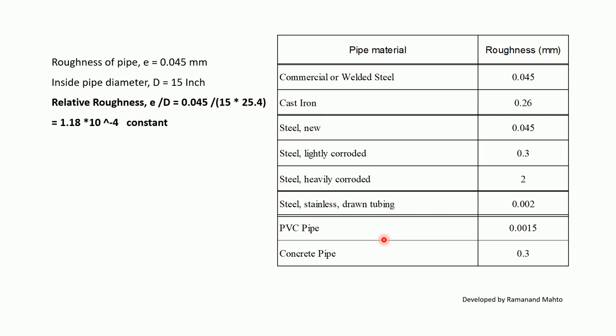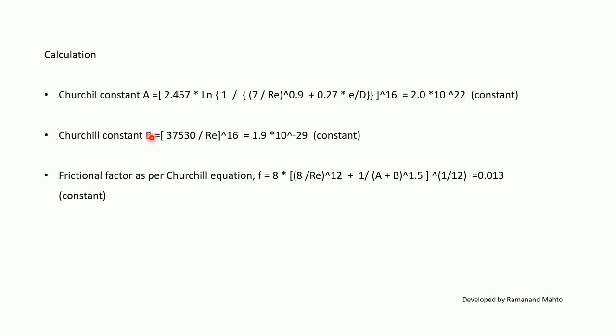From the chart, roughness of pipe e = 0.045 mm and inside pipe diameter = 15 inches. Relative roughness = 0.045 / (15 × 25.4) = 1.18 × 10⁻⁴. Churchill constant A = 2.1 × 10²². Churchill constant B = 1.9 × 10⁻²⁹. Friction factor from Churchill equation = 0.013.